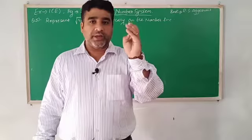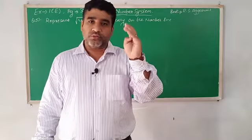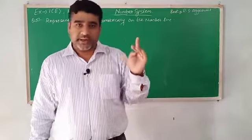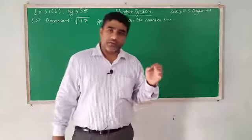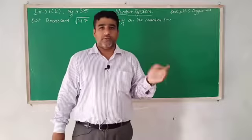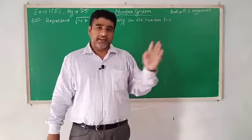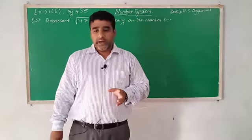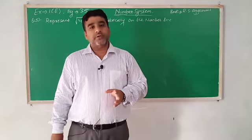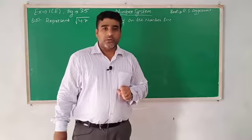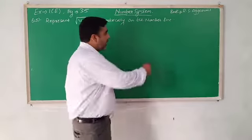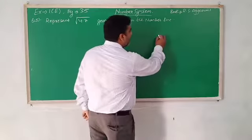We represented root 2, root 3, root 5, root 6, root 7, root 8, root 9, root 10, root 11, root 12, and root 30. I have also given you some homework. Now let's quickly revise how to represent root 2 on a number line.